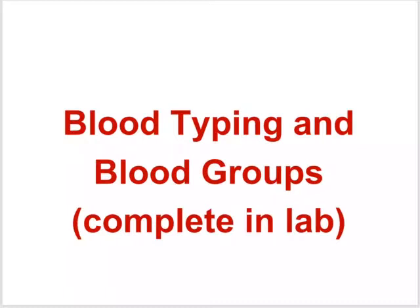A transfusion reaction occurs if the antigens in the donor blood type are attacked by the blood plasma antibodies of the recipient. When it happens, it results in agglutination — clumping — and also hemolysis, or destruction of the donor's blood cells. Type O blood is the universal donor type because it has no antigens. The AB blood group is the universal recipient because it has neither anti-A nor anti-B antibodies in the blood plasma, so it can potentially receive any ABO blood type. Blood typing is really important, and testing before any transfusion involves determination of possible transfusion reaction between the donor and recipient blood types.